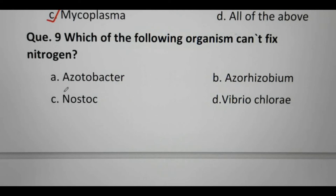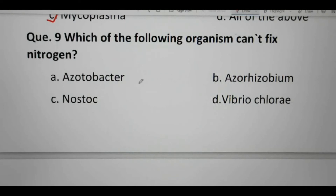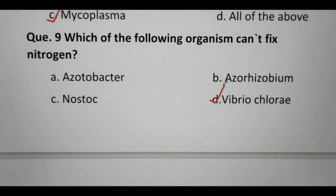Next question: which of the following organisms cannot fix nitrogen? Options are Azotobacter, Azorhizobium, Nostoc, and Vibrio cholerae. Azotobacter and Azorhizobium can perform nitrogen fixation. Nostoc belongs to the Cyanobacteria group and also has the capacity for nitrogen fixation. So D, Vibrio cholerae, will be our right answer.